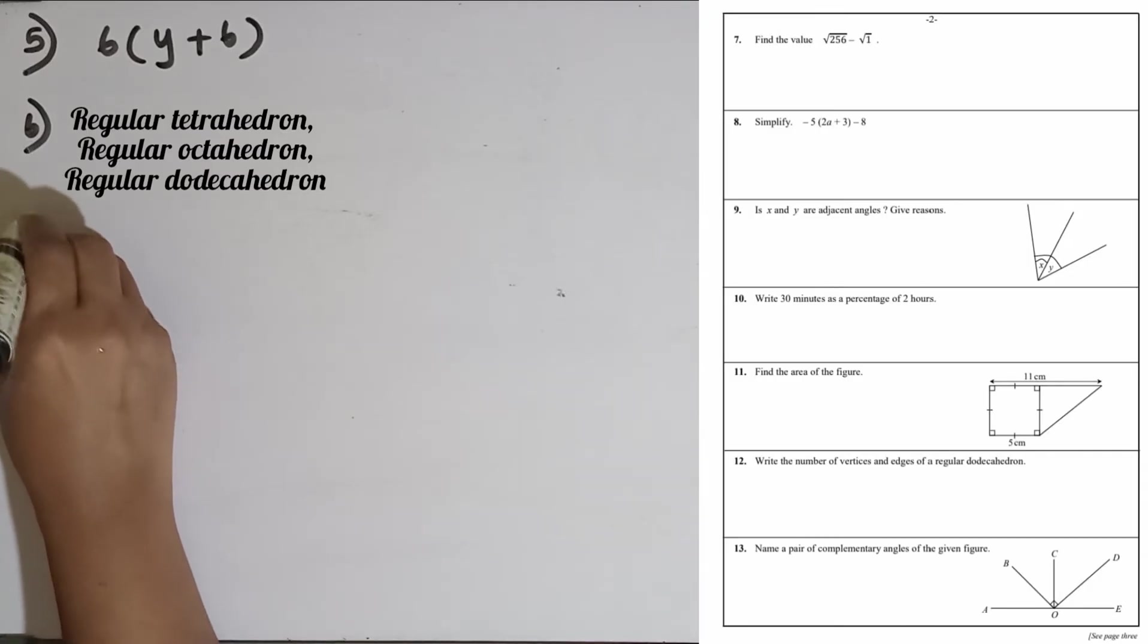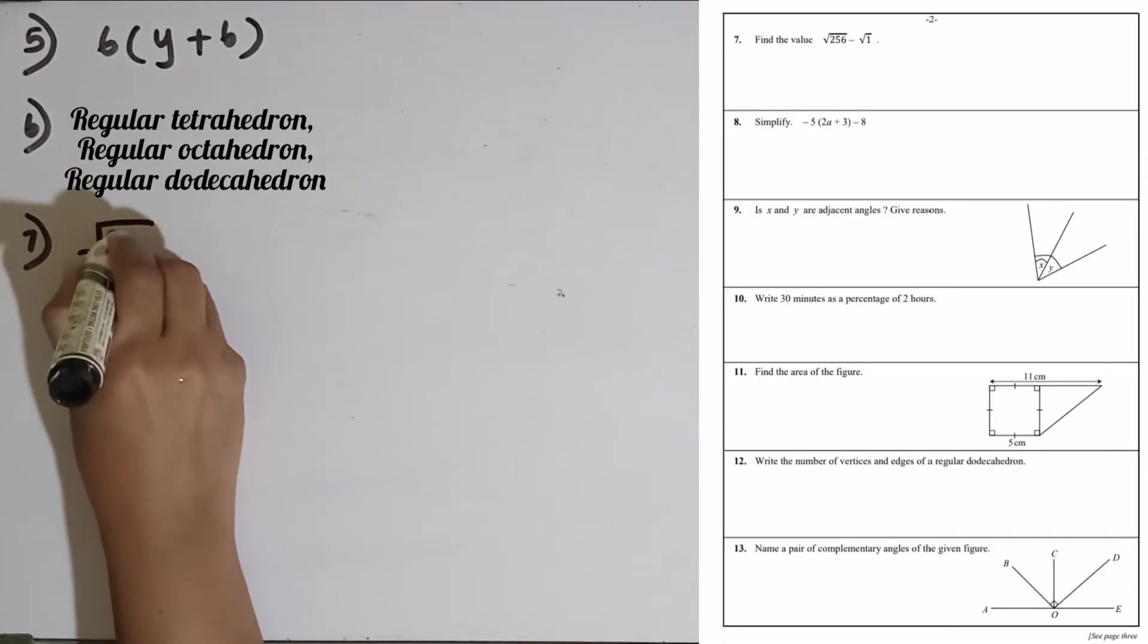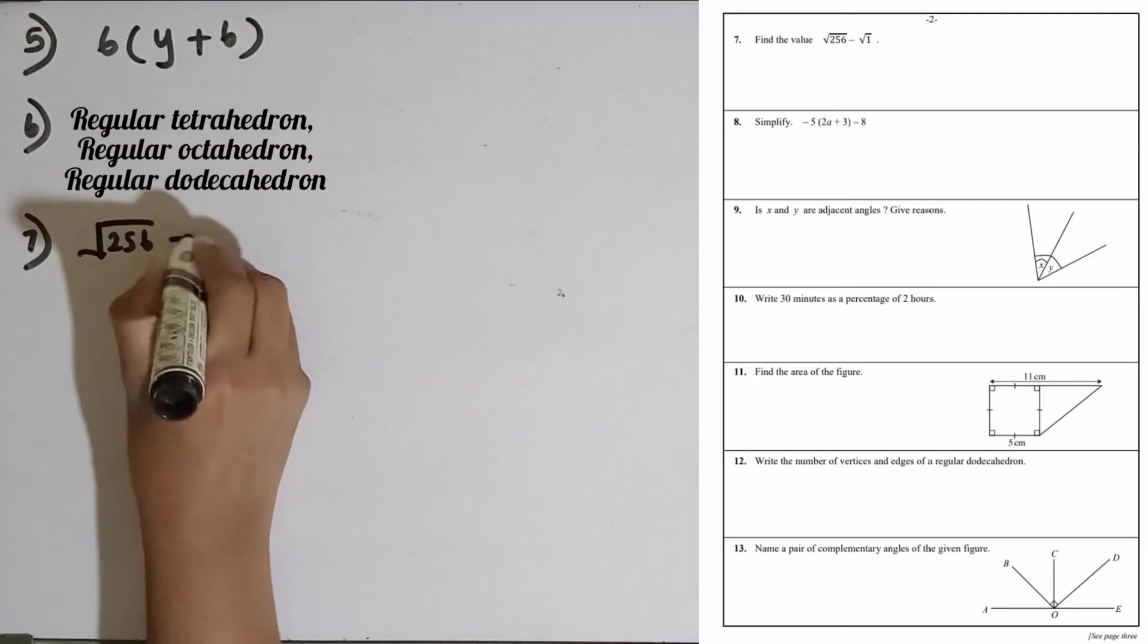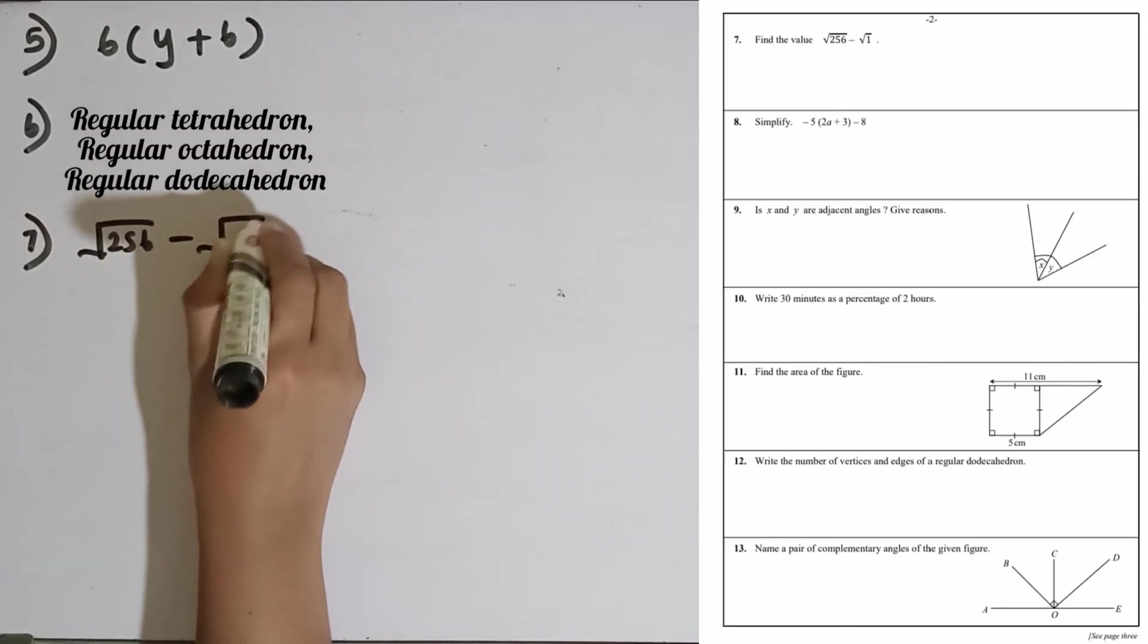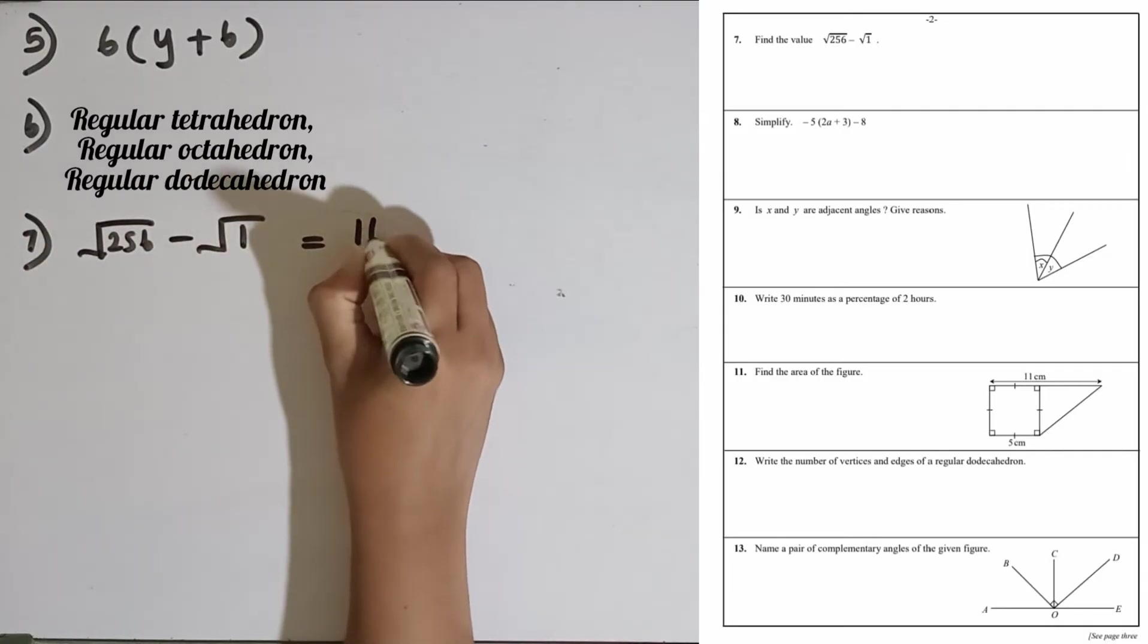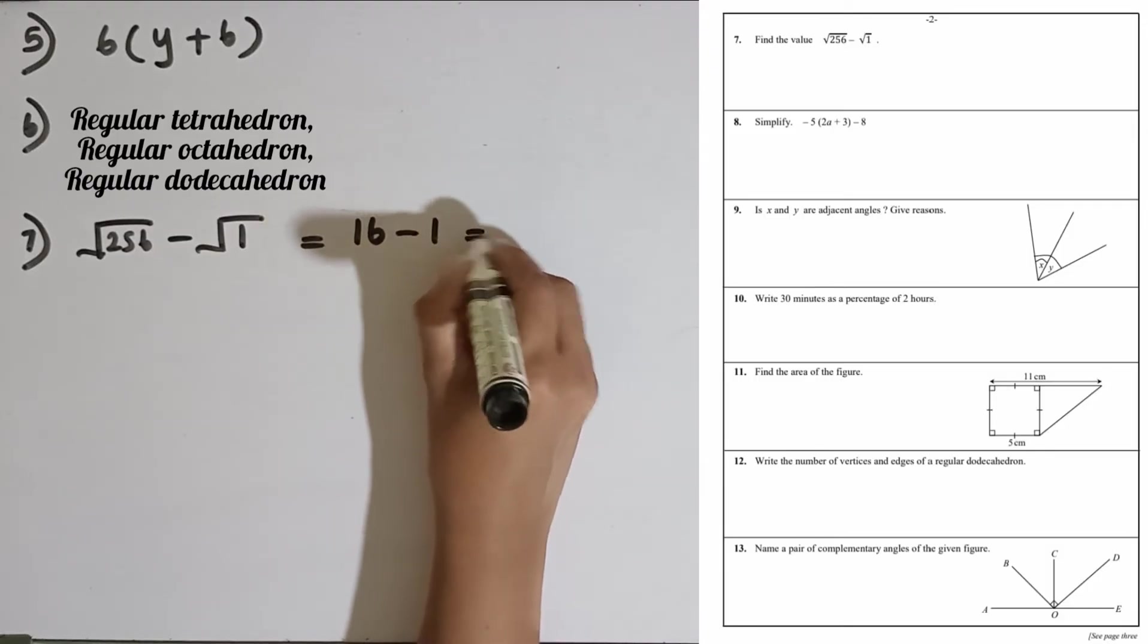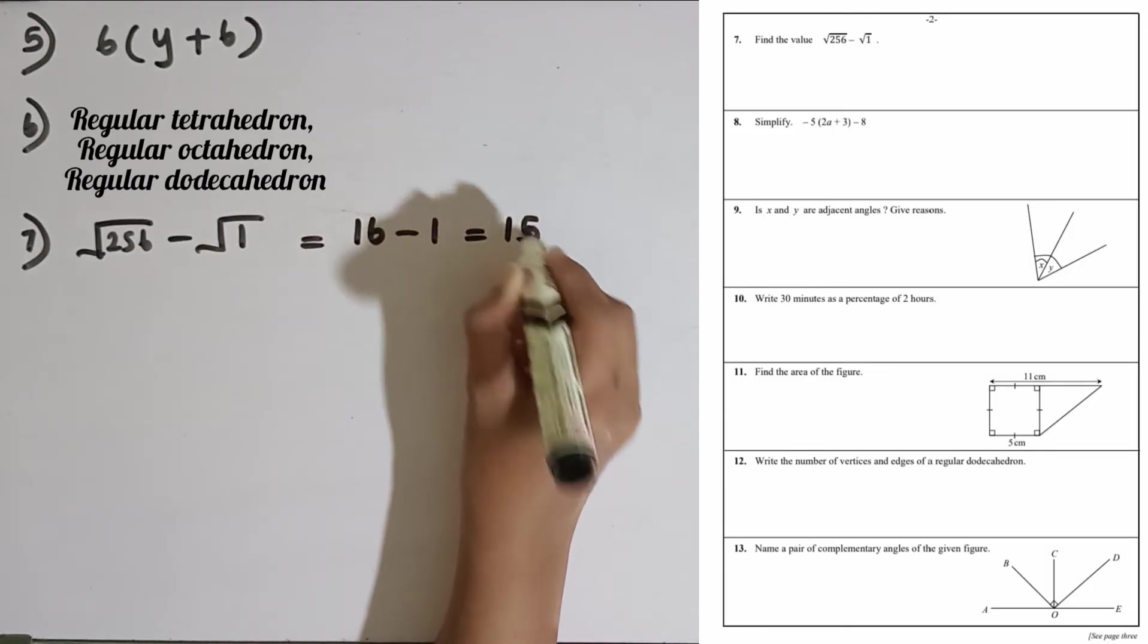Question number 7: Find the value, square root of 256 minus square root of 1. Square root of 256 is equal to 16, then square root of 1 is equal to 1. 16 minus 1, the answer is 15.